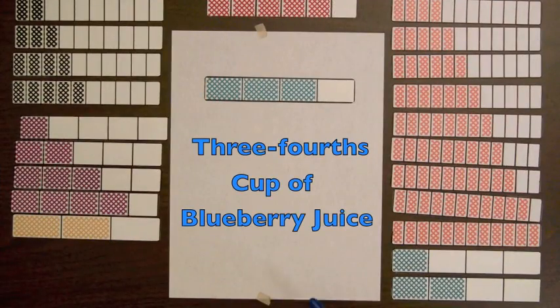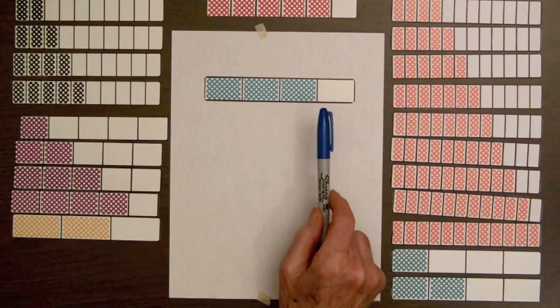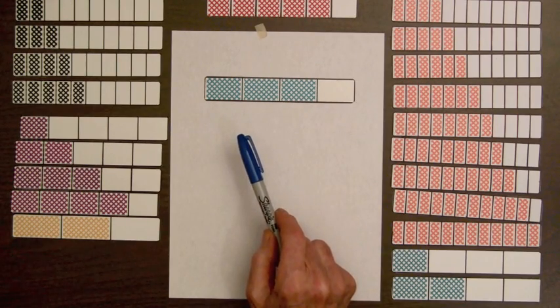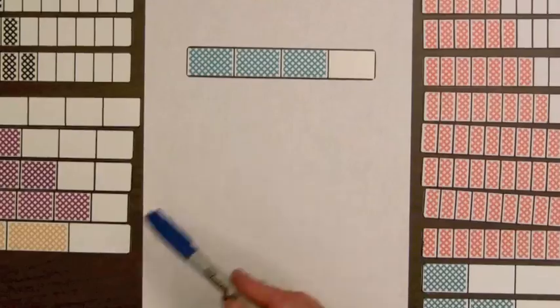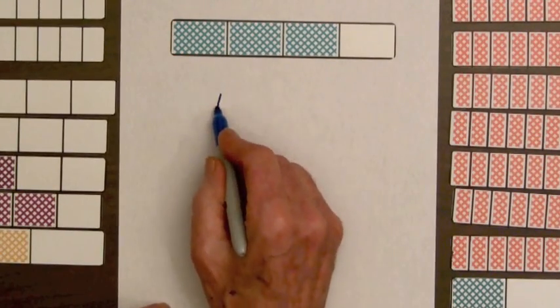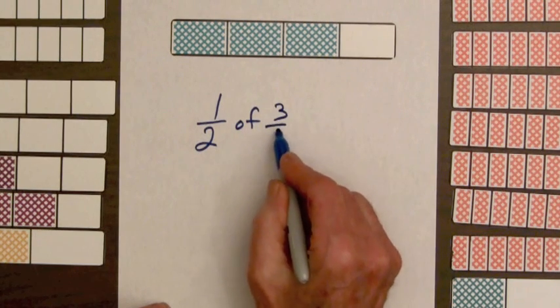Let's look at one more example. Suppose a recipe calls for three-fourths cup of blueberry juice, and you wish to cut the recipe in half. What fraction of a cup of blueberry juice will be used? Let's record what we are trying to do here. We want to take one-half of three-fourths.